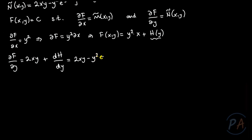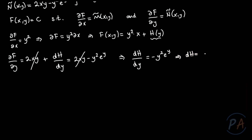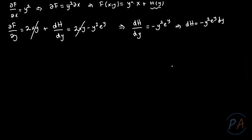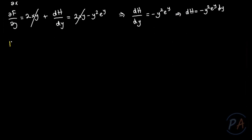The 2xy terms cancel, leaving dh/dy = minus y²·e^y. This is a simple separable differential equation, so dh = minus y²·e^y dy. Integrating both sides, h(y) = minus the integral of y²·e^y dy. The final step is to calculate this integral.